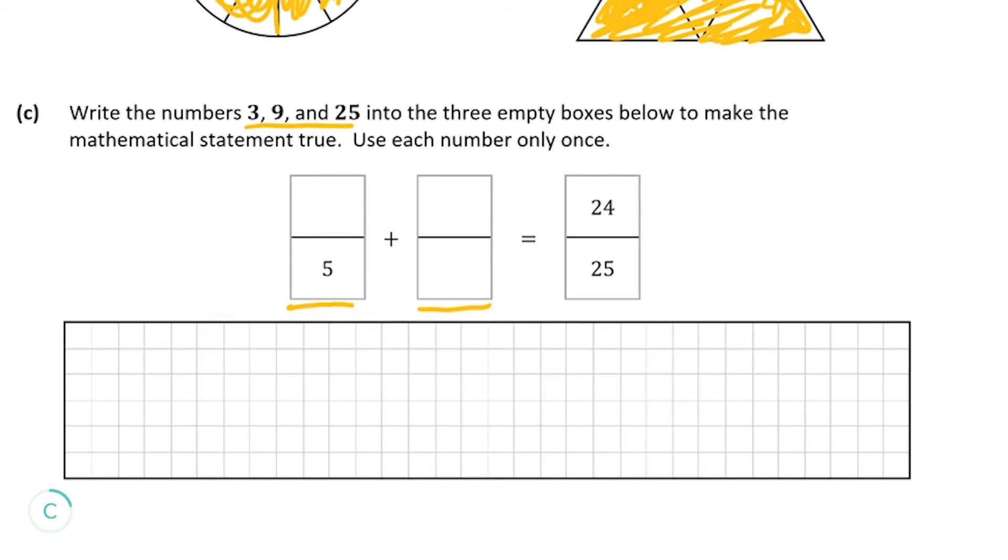So with this question it's a bit tricky because there's no real starting point, there's no obvious place to start with this question. But I think the best way of doing this is looking at the right hand side and seeing that we have 24 over 25. And so this bottom number here is 25, and we actually have 25 as one of our numbers we have to fill in.